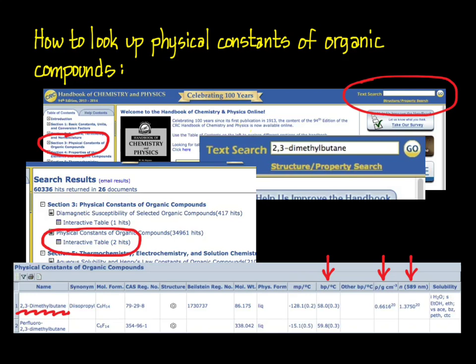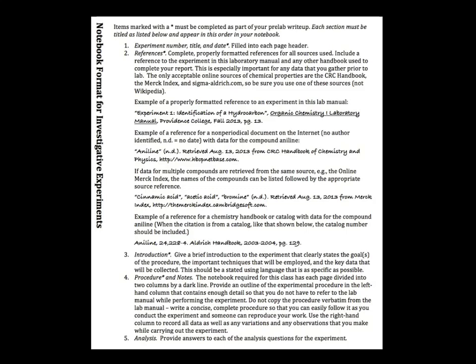Since both the density and refractive index are temperature dependent, the temperatures at which those were measured are indicated with a superscript. With your compound data in hand, read the background and the procedure sections of the experiment and prepare your notebook. All of the items listed with an asterisk on page 9 in your lab manual must be completed before you come to lab. This includes filling out the headers on each page, providing references to the lab manual and any data sources that you use, with the proper formats illustrated.